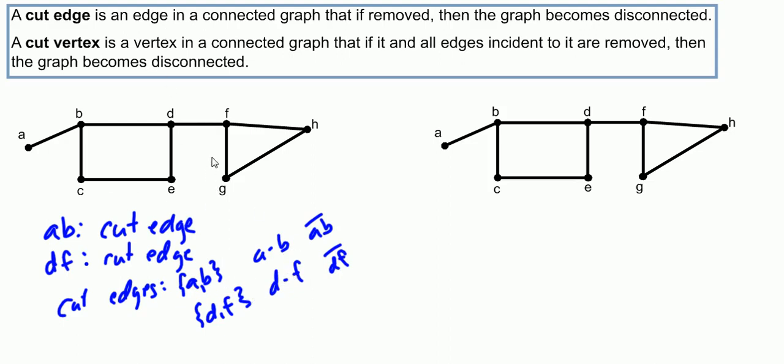So the idea of a cut edge, again, if you take the edge down, can you still get from every one vertex to any other vertex? And it's easiest to do by kind of systematically going through each one. Use your finger on a piece of paper to kind of cover up the edge and see if there's any breaks in the graph.